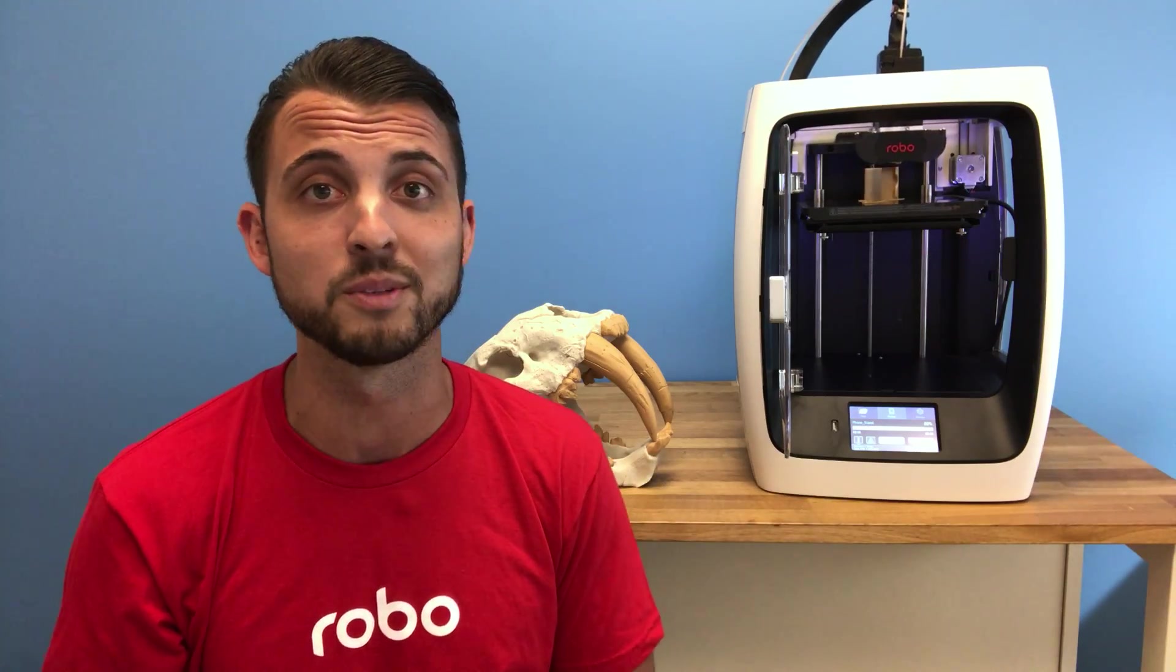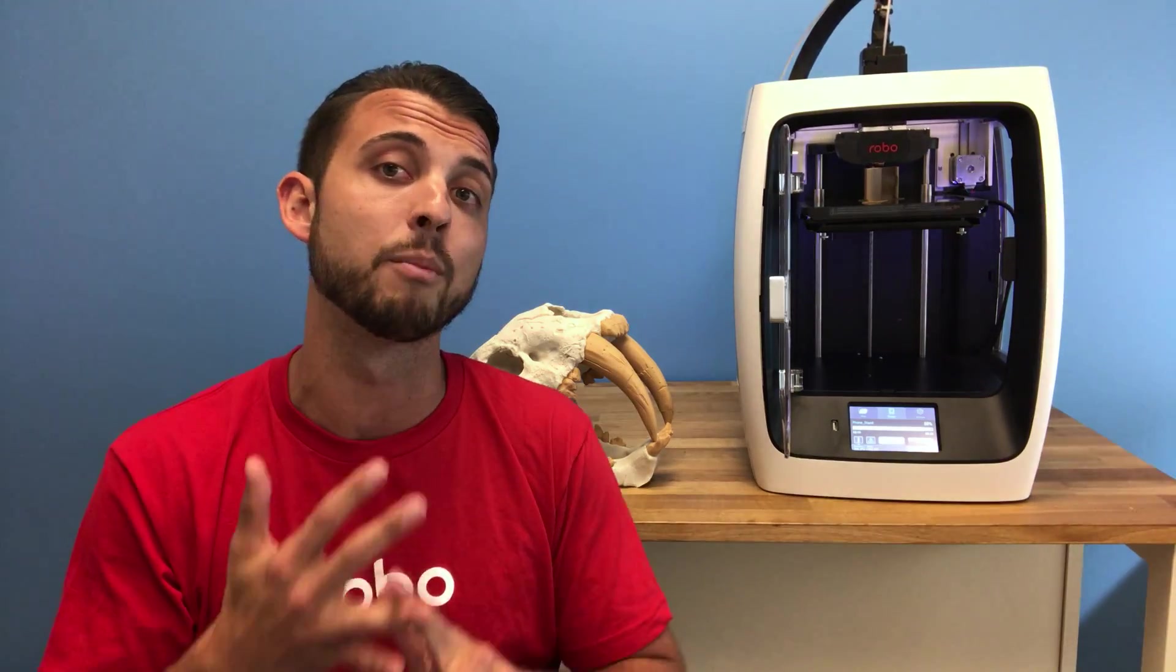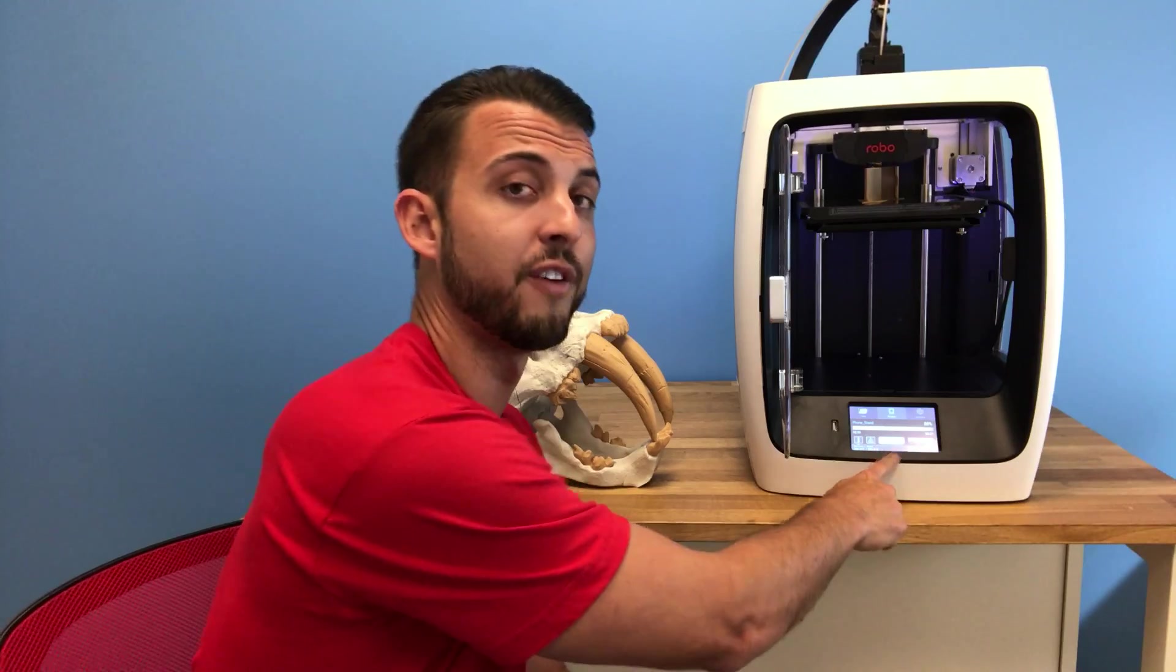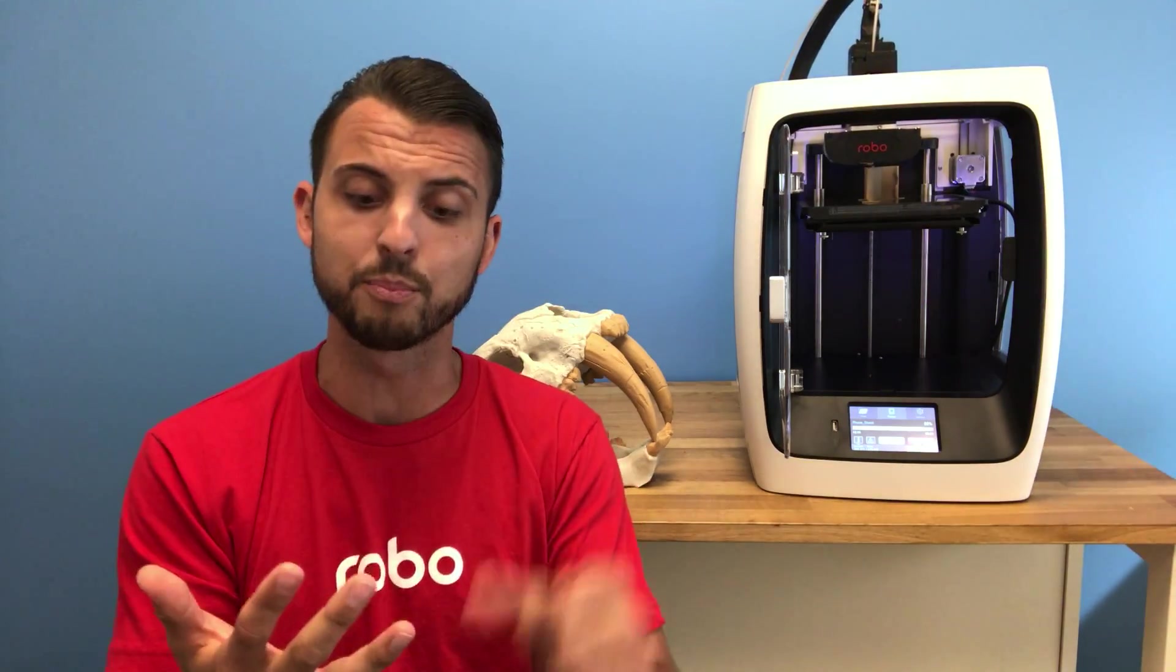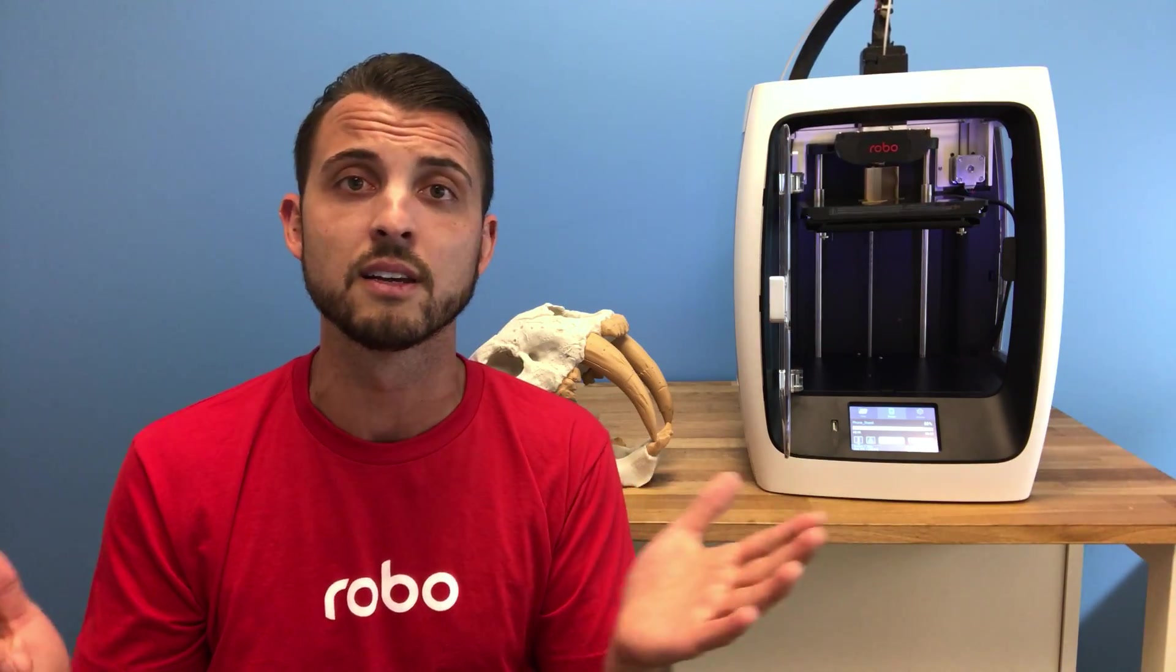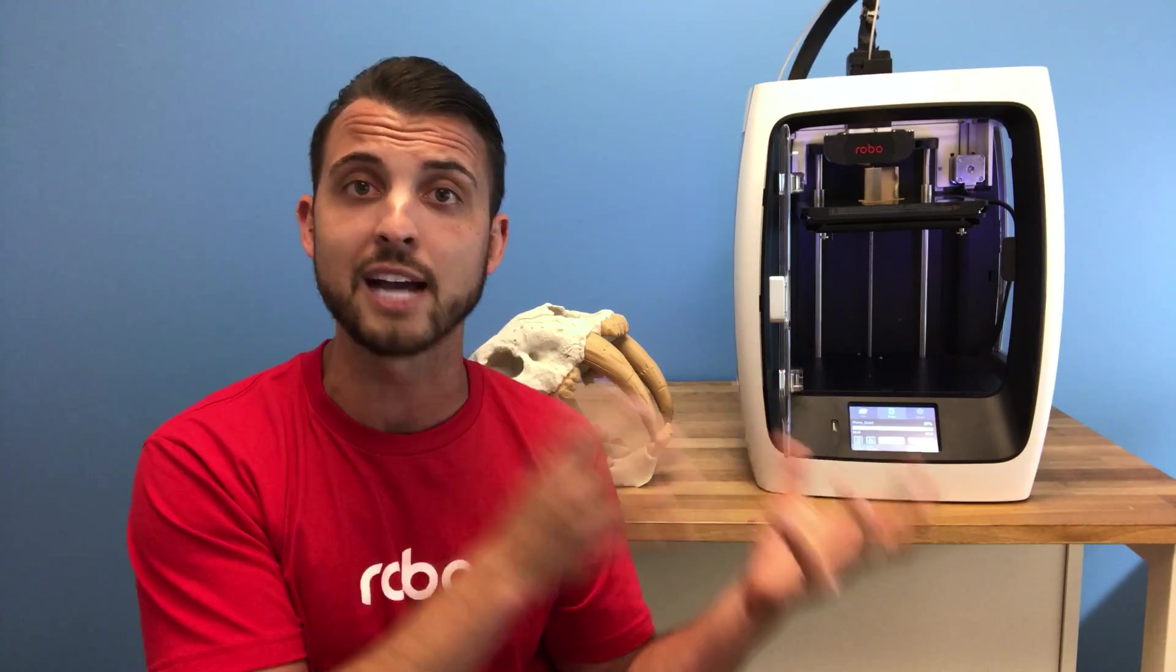This Robo R2 high-performance machine has tons of amazing features. It has an 8x8x10 build platform. It has a heated removable platform which will allow you to print with all the open source materials that are out there. So you're not forced to print with just the materials that we make. We have a full 5-inch color touchscreen. This will allow you to start prints, stop prints, monitor prints, change your settings all from the actual machine itself.